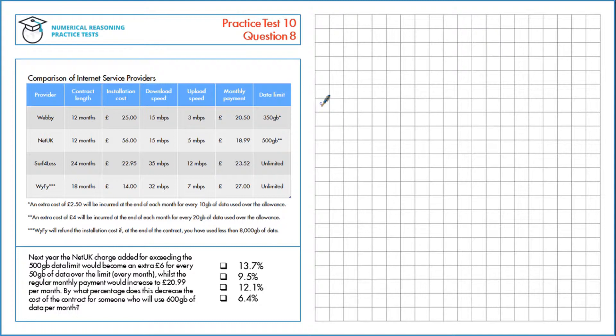By what percentage does this decrease the cost of the contract for someone who will use 600GB of data per month? If they use 600GB of data per month, they're 100GB over the limit.